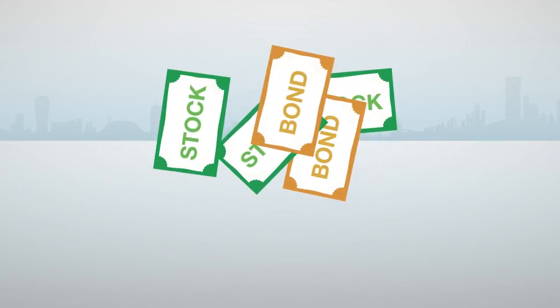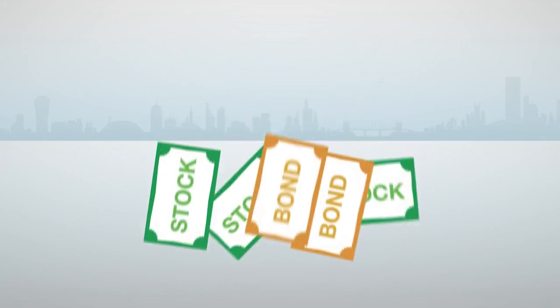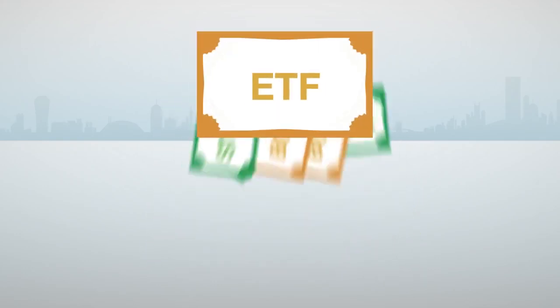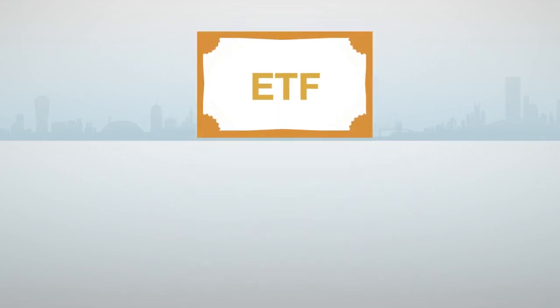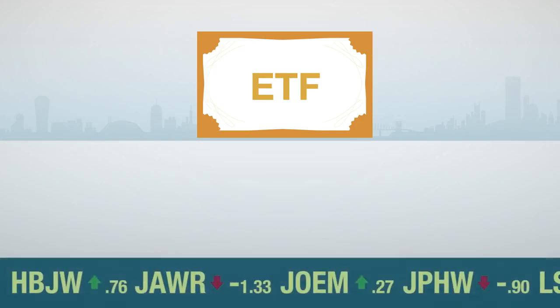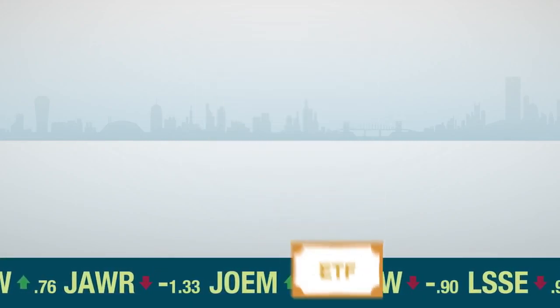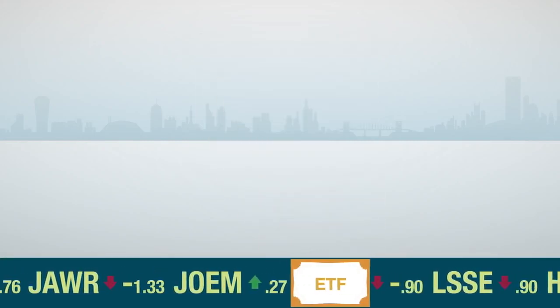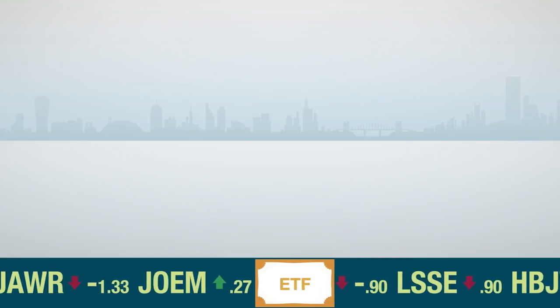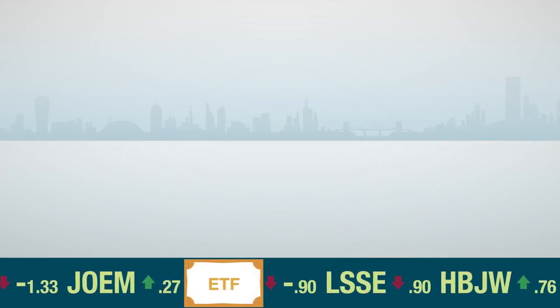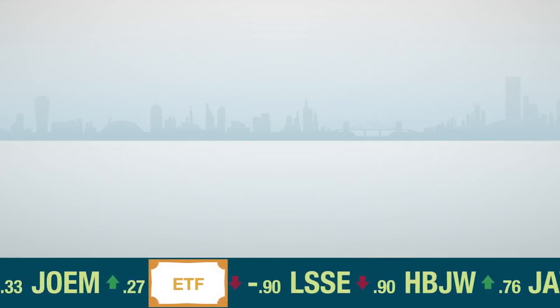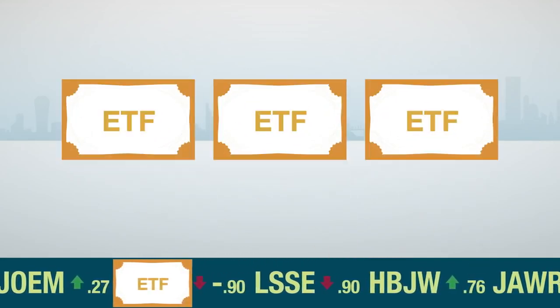By spreading the fund's money into different securities, ETFs can generally provide investors with diversification, which can help balance risk. And because ETF shares are traded on a stock exchange, they're bought and sold like stocks, and usually incur commissions and other related fees.